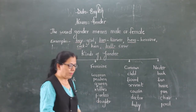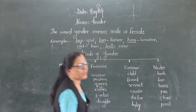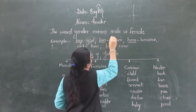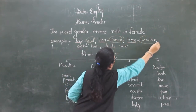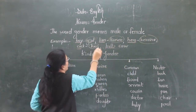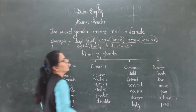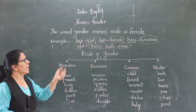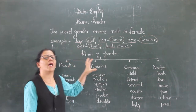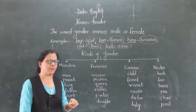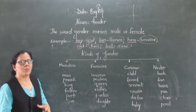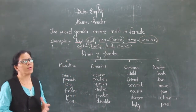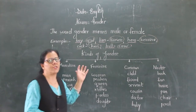And the second word of each pair — that is girl, lioness, heroine, hen, cow — these are female. So these are genders. Only nouns can have genders, because nouns are names of persons, places, and things, and these have gender.